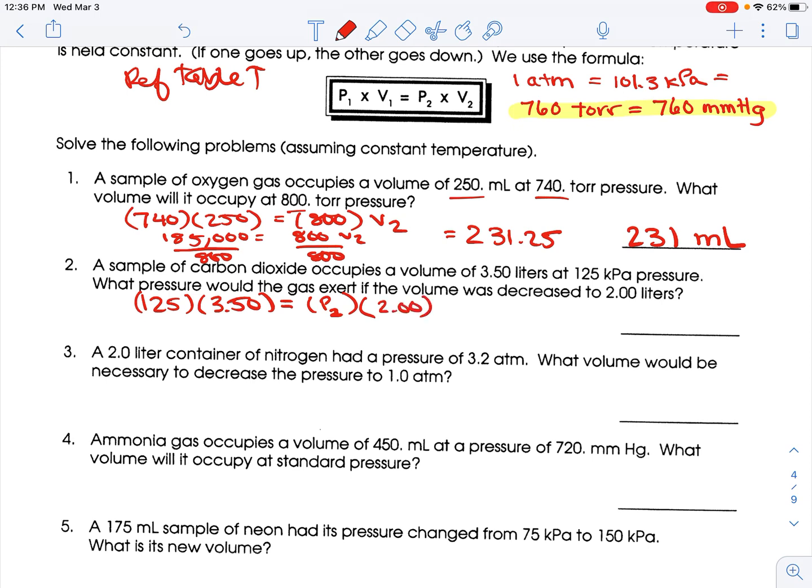So, 125 times 3.50 is 437.5 equals P2 times 2. Divide both sides by 2, and you get 218.75. Three sig figs, three sig figs, three sig figs. So, I'm going to round it to 219 kilopascals.